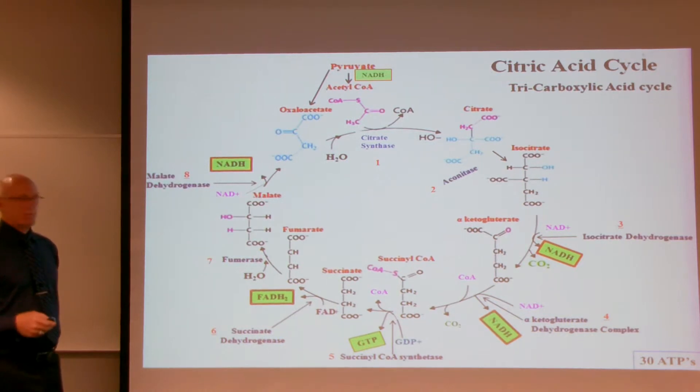Now the eighth step, malate dehydrogenase, will dehydrogenase malate by taking off a couple of hydrogens, and thereby creating another reduced form of nicotinamide adenine dinucleotide, yielding the oxaloacetate.